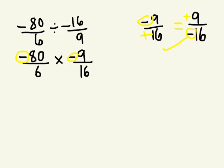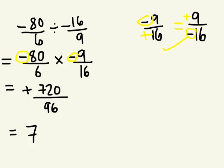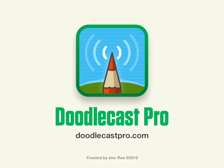Okay? So now we're multiplying fractions. Negative times a negative. Good. 80 times 9. Good. 6 times 16. 96. 96. And let's write this in lowest terms. I'll give you a minute. Good. 7 and a half in lowest terms. Made with DoodleCast Pro.